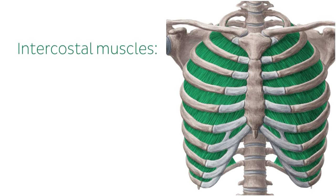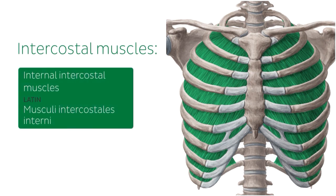In this illustration on the right we can see the internal intercostal muscles. These muscles function to lower the ribs during expiration, or when we exhale, as well as to support the intercostal spaces and stabilize the chest wall. Before we move on to the external intercostal muscles, I just want to draw attention to the direction of the muscle fibers.